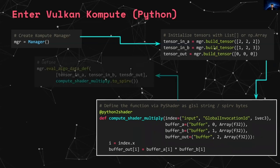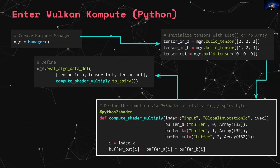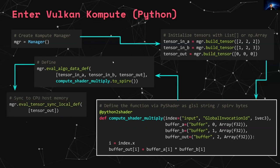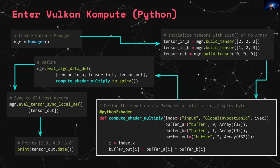You then define the shader code — the code that will run on the GPU. In this case, it's a simple multiplication using the pyshader decorator. We have the first buffer, the second buffer, we run a multiplication and store it in the output. We then run it through the manager, specifying we want to run this synchronously using these three tensors and this shader. We can also run it asynchronously with many optimizations available. Once it's finished running, you copy the data back so the output is visible to the CPU. And you can print it — the output is 2, 4, 6.